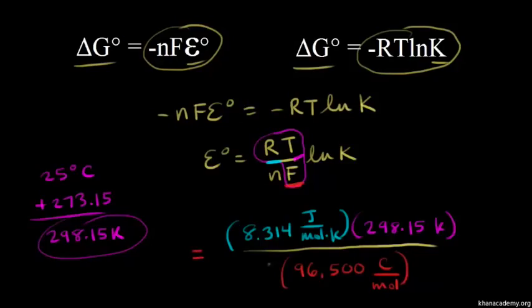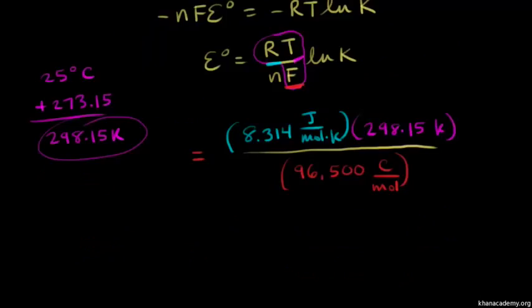So this gives us RT over F, which gives us 0.0257. What will the units be? Kelvin would cancel out here, the moles would cancel out, and that gives us joules over Coulombs, which is equal to volts.